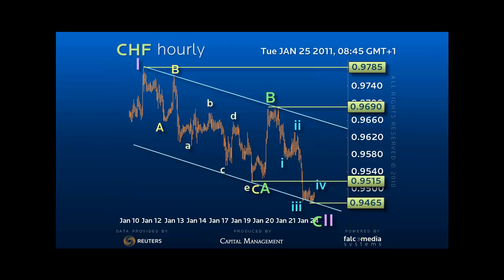Thus, we have to allow for a final dip through 94.65 towards the 94.20 area to end the move and trigger a strong recovery — back through the 95.70 pivot for 97.85 later on. Thus, buy the projected dip or a break of 95.70. Good luck and trade well.